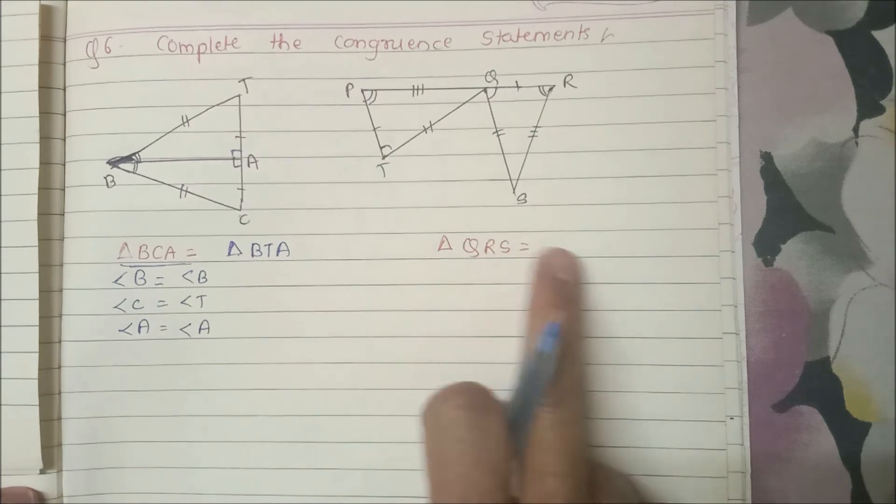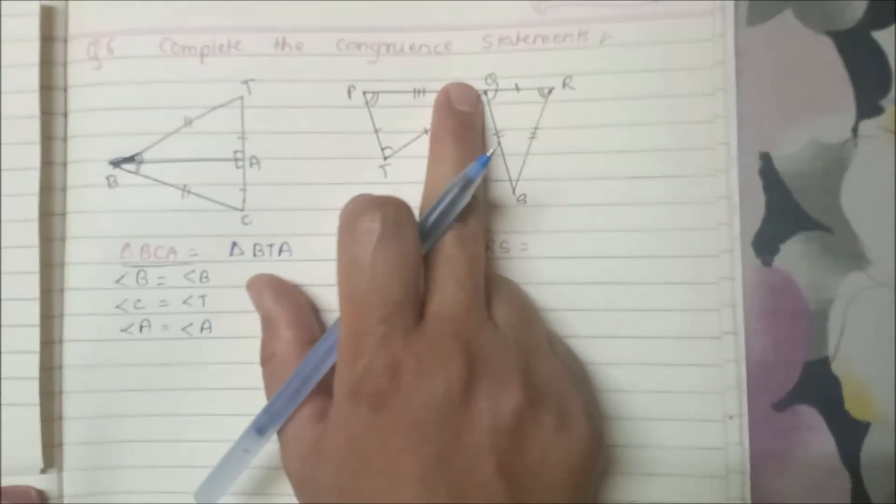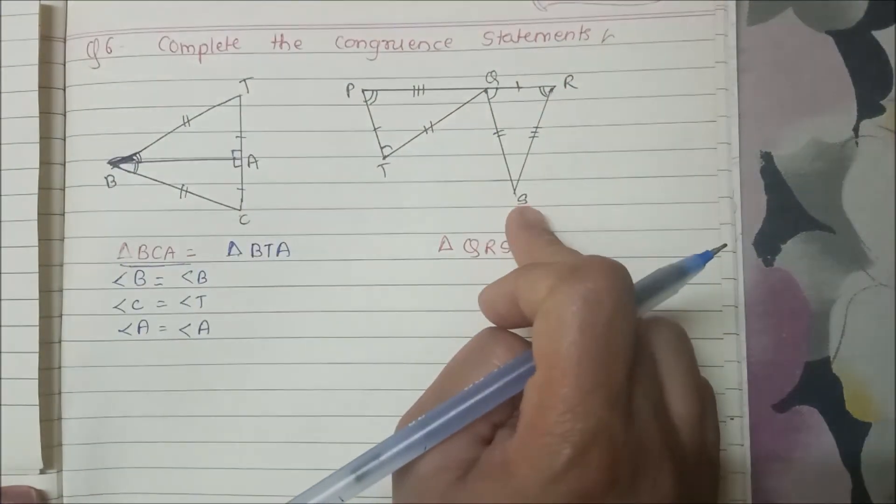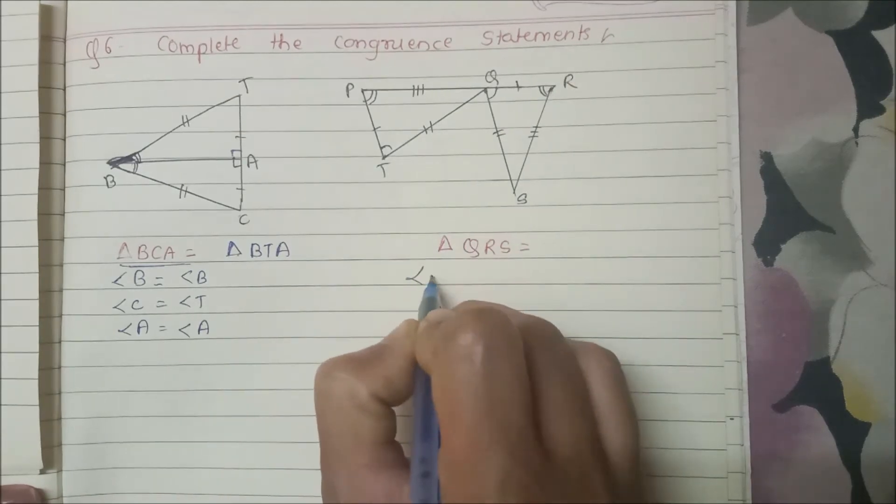Second, we have Q, R, S. Right. So Q angle here, R, S here. So we have angle B, T, A.